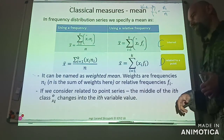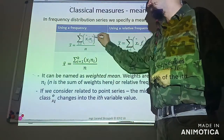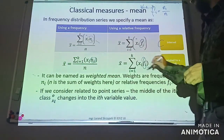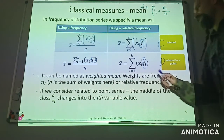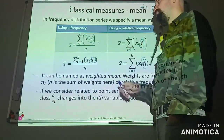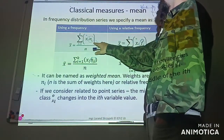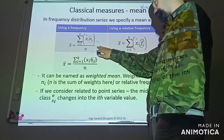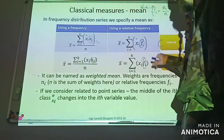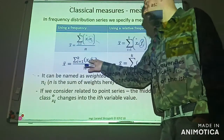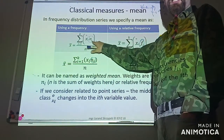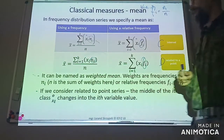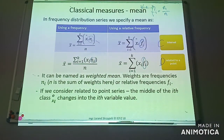In this kind of reasoning, N_i's and F_i's represent weights. So we can treat this kind of measure as a weighted mean. It means that the middle of the classes or values of our variable are weighted by frequencies or relative frequencies.